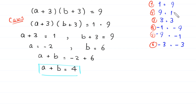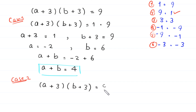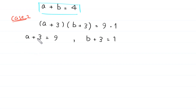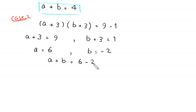In case 2, we write (a plus 3)(b plus 3) is equal to 9 times 1. So a plus 3 is equal to 9, giving a equal to 6, and b plus 3 is equal to 1, giving b equal to negative 2. Therefore a plus b equals 6 minus 2, which equals 4. We get the same solution from case 2: 4.